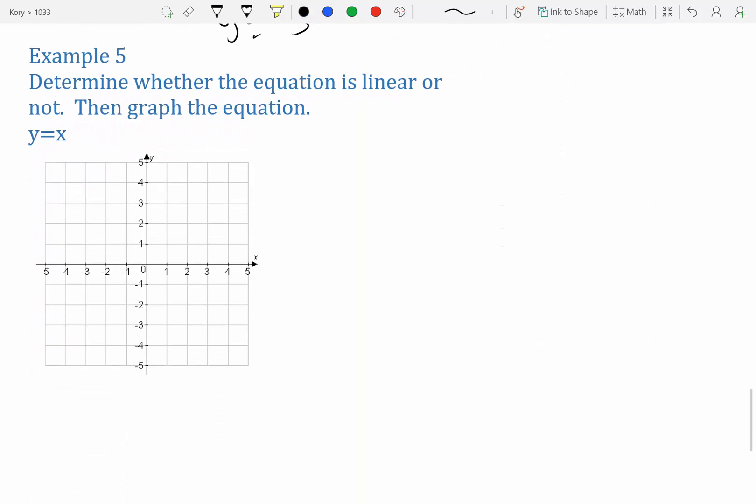Moving on to the next example. We're going to do the same thing again. Pick the same points. So we have negative 1, 0, and 1. So if it's just y equals x, that means we have y equals negative 1, y equals 0, and y equals 1. So negative 1, 0, 1. Let's plot our points.